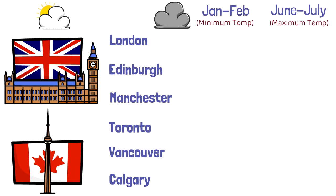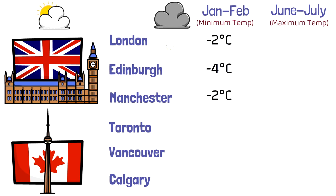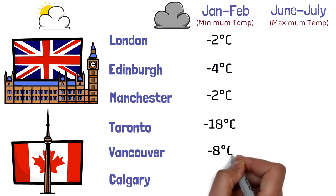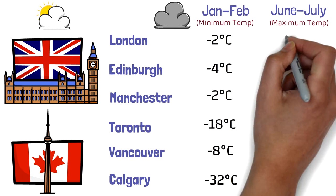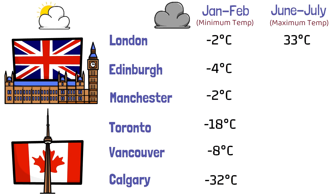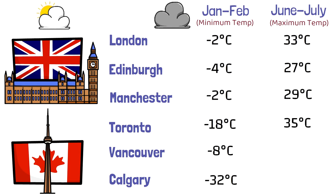These temperatures are from 2020. In January/February, the minimum temperature in London was minus 2°C, Edinburgh minus 4°C, and Manchester minus 2°C. For Canadian cities, Toronto hit minus 18°C, Vancouver minus 8°C, and Calgary minus 32°C. In summer, London reaches around 33°C, Edinburgh 27°C, Manchester 29°C, Toronto 35°C, Vancouver 30°C, and Calgary 28°C.